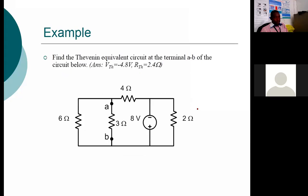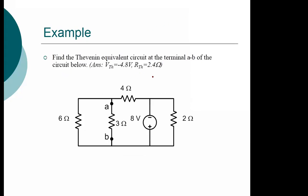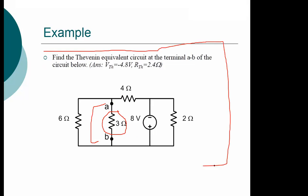The second example: find Thevenin's equivalent circuit at the terminals A and B of the circuit below. If everyone wants to find that, the first stage is to remove the 3-ohm resistor. Then find Thevenin's equivalent resistance across A and B. After that, find Thevenin's equivalent voltage across A and B. Then you get your results. Take a screenshot of that — we will explain that example when we come back.